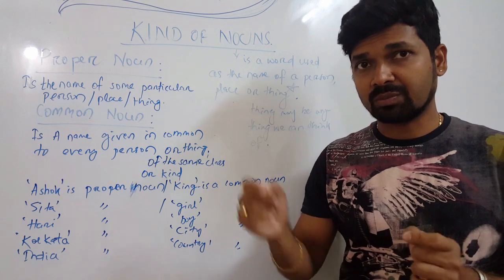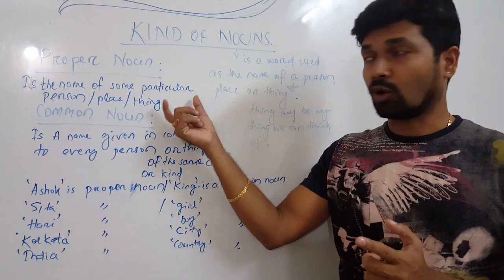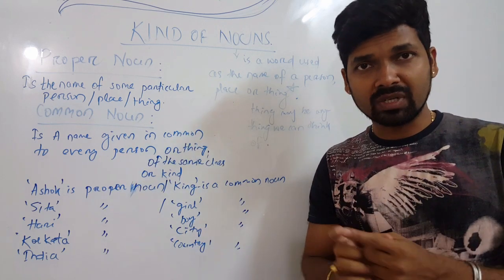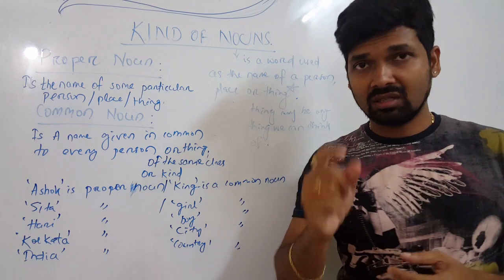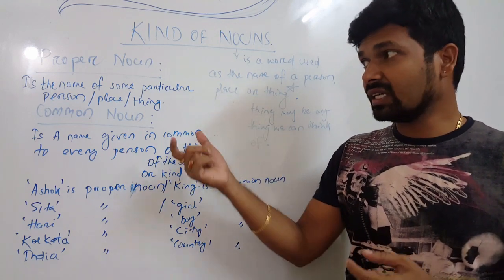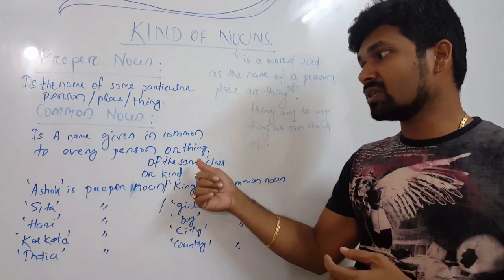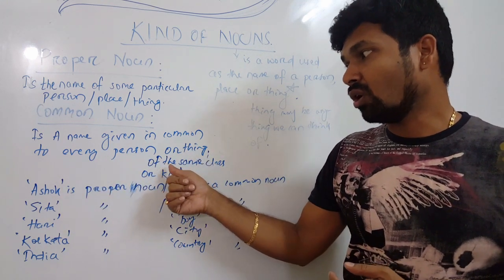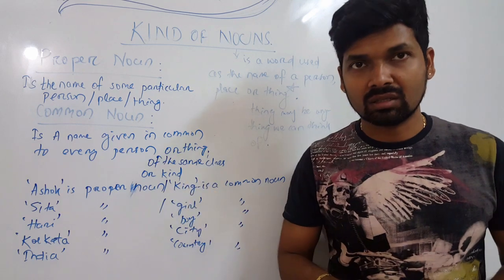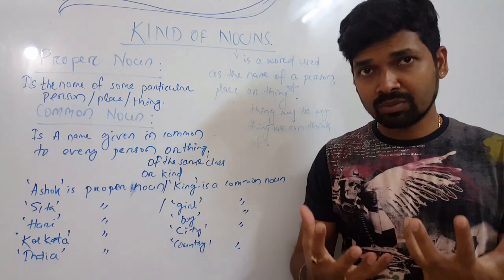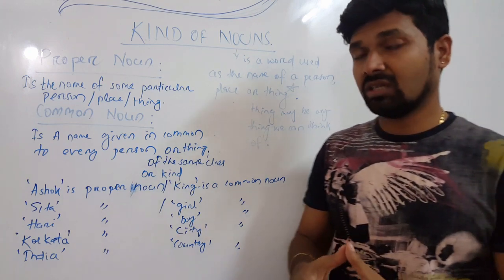For example: Kolkata is a beautiful city. Here, Kolkata is a proper noun because it is the name of a particular place. City is a common noun. A common noun is a name given in common to every person or thing of the same class or kind.